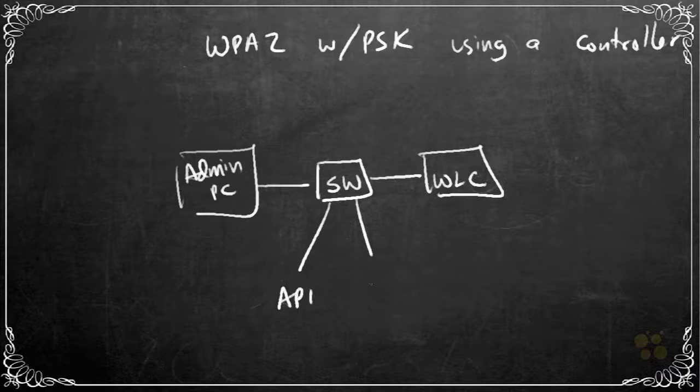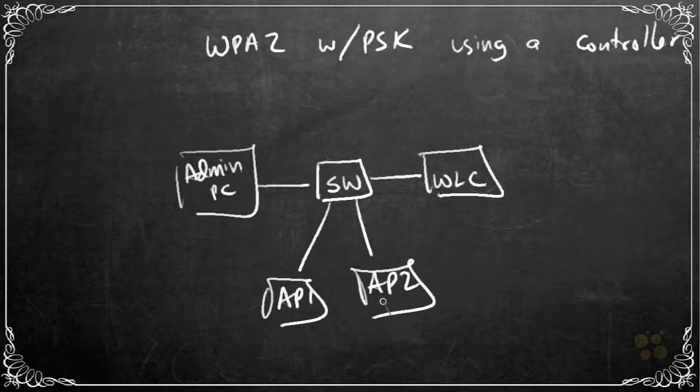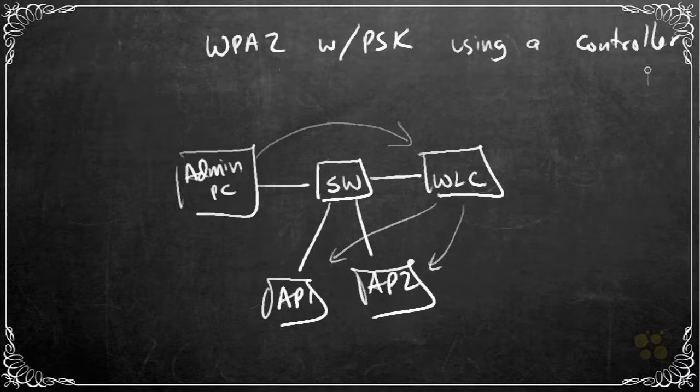And then we'd want a few access points. Let's call this AP1 and AP2. The concept could be spread out to multiple access points and the idea here is that we would communicate with the wireless LAN controller, and then the wireless LAN controller based on our instructions would interact with the access points to tell them what to do, including the type of security to use.